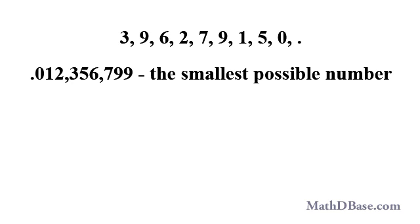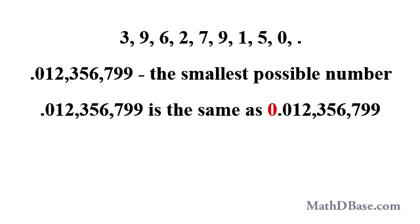But in this case we should place all of the digits in ascending order after the decimal point, and we get 0.012356799. This number starts with the decimal point, but it is understood that there is a zero before it, meaning that the whole number value of the number is zero.